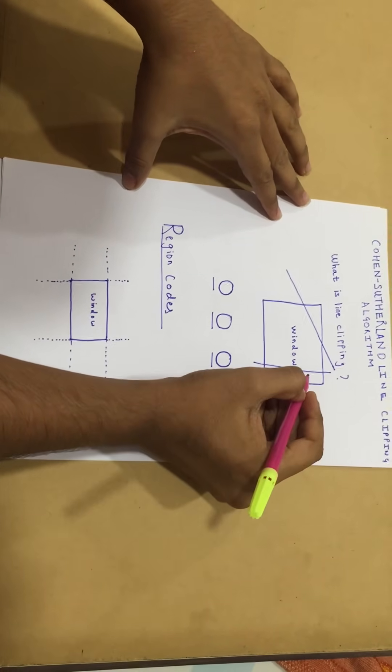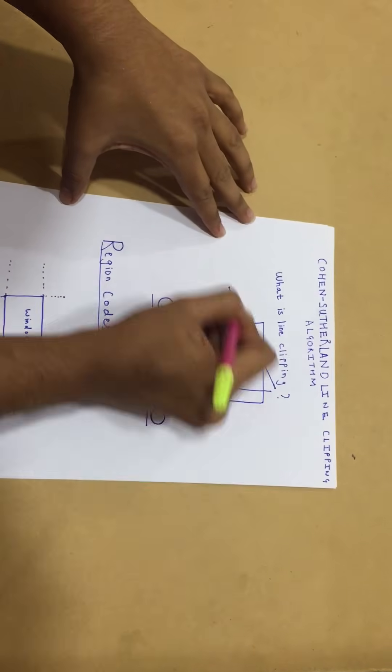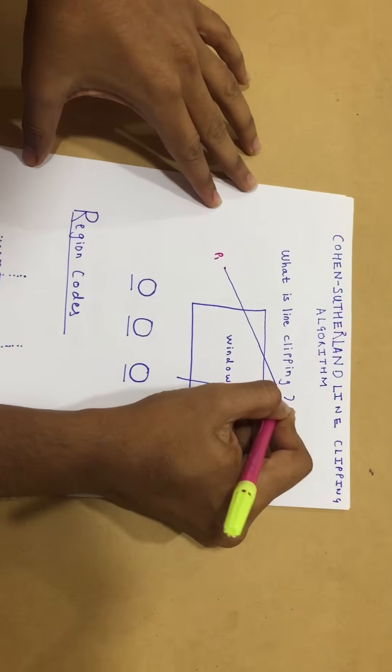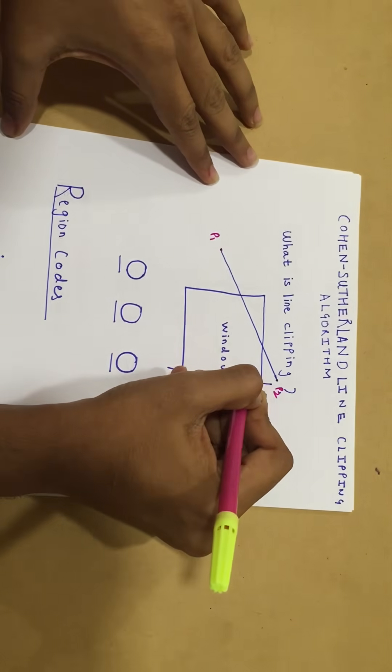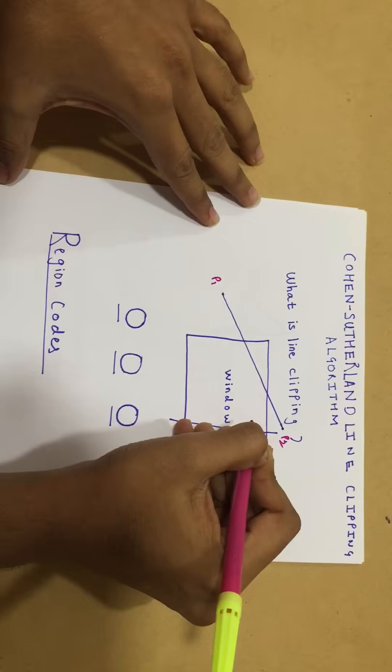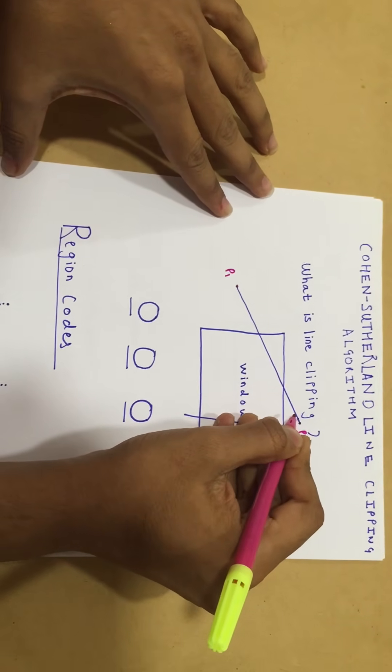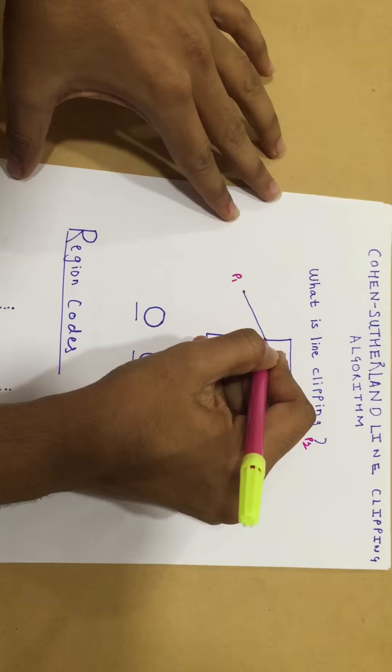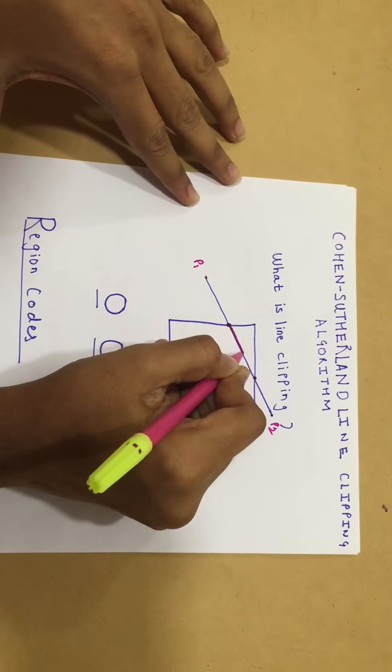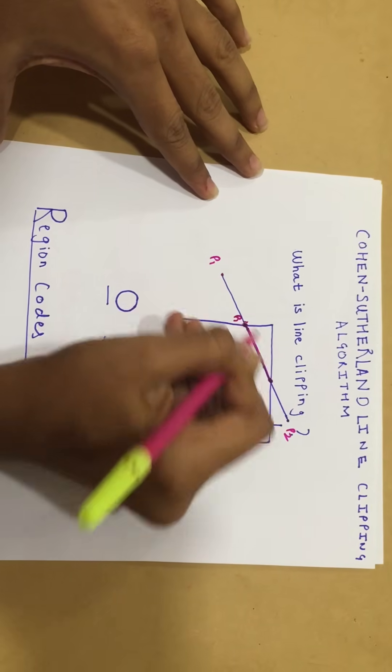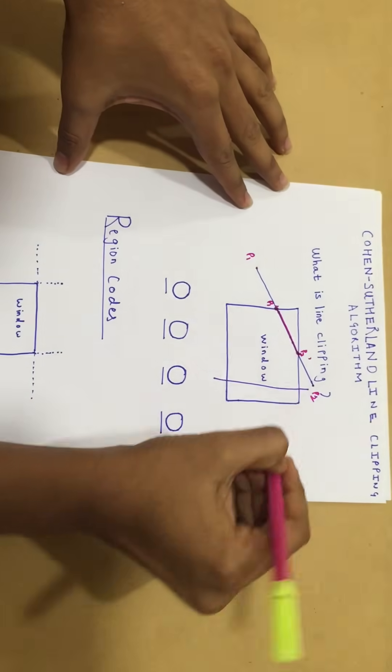What is line clipping? Suppose we are given a window and we are given a line with the points as P1 and P2. If this line is to be clipped against this window, then only the part of the line which is inside the window is to be retained and the other part has to be scraped off. In this case, we only retain the part which is inside the window and I'm going to highlight it for you. I'm going to label it as P1' and P2'. So this is my clipped line.